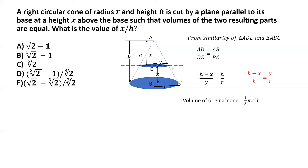The smaller cone formed at the top has height h minus x and radius y. Using the same cone volume formula, the volume of the smaller cone is one-third pi y squared times h minus x.